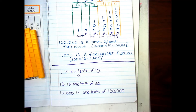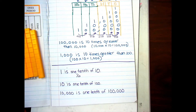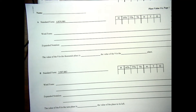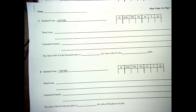Now we're going to go ahead and do a few examples together. Please ask if you have any questions — raise your hand and I will explain. Pause your video — you will need place value 1A, page 1. And if you'd like, you can get a yellow highlighter, a green highlighter, and blue, or crayons in yellow, blue, and green.